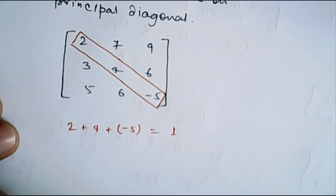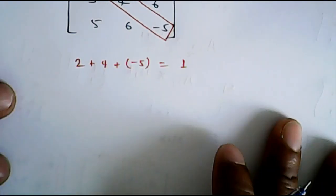Now, this is very clear that when I am talking about principal diagonal of a matrix, it means the matrix has to be square matrix.